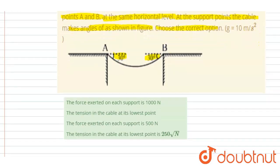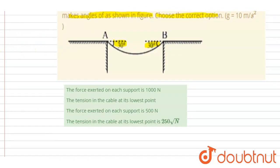If you see, the options are: the force exerted on each support is this, tension in the cable at the lowest point is this, the force exerted on each support is this, and tension at the lowest point is this.